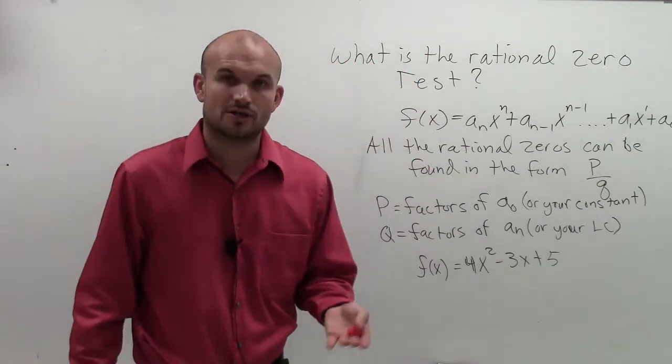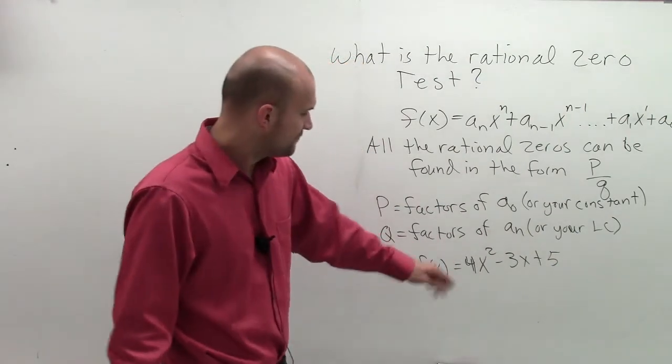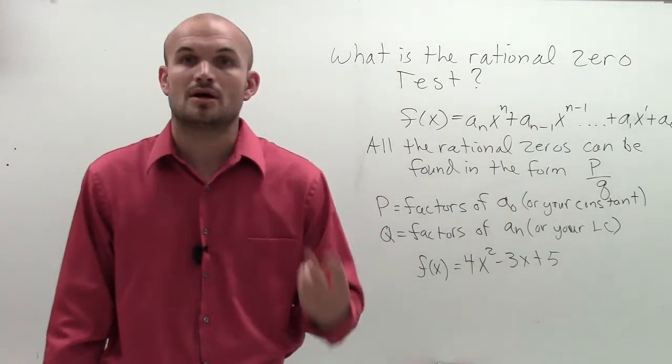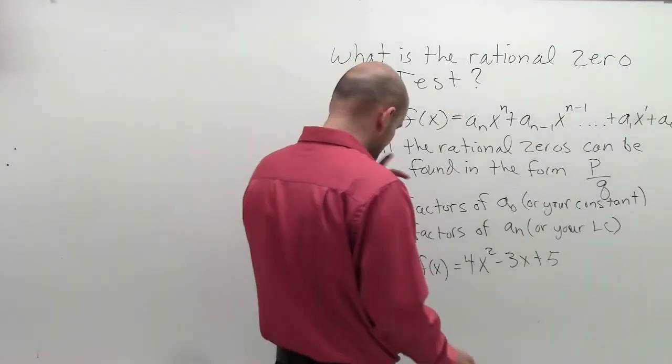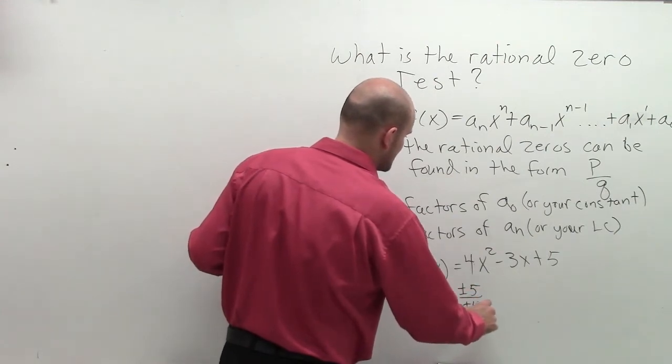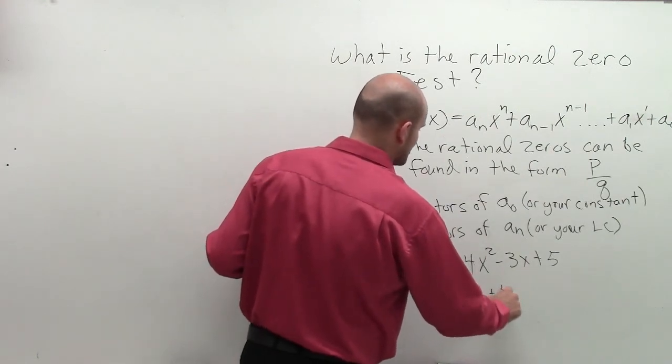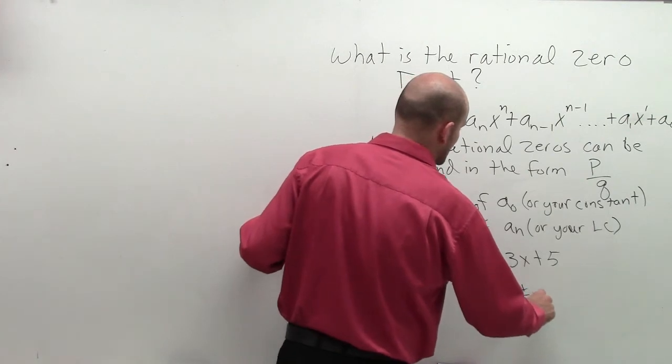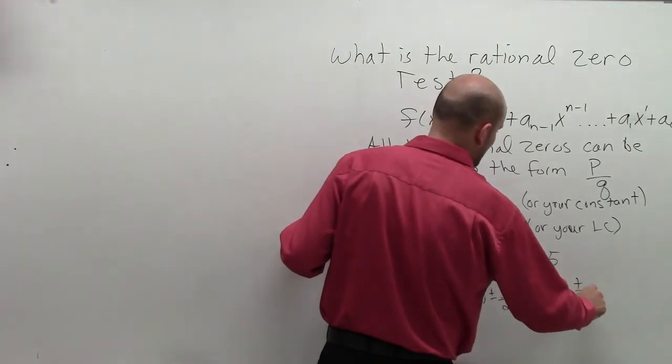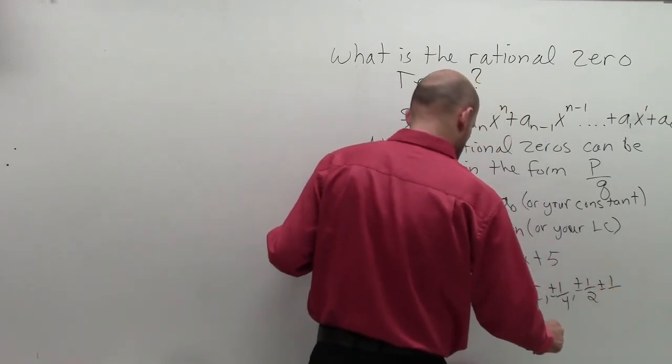So what we're going to do is we're going to take a look at all the factors of p. All the factors of p are going to be plus or minus 5 and plus or minus 1. For 4, all my factors are plus or minus 4, plus or minus 2, plus or minus 1. So we write our p over q. So it's going to be plus or minus 5 over 4, plus or minus 5 over 2, plus or minus 5 over 1, plus or minus 1 over 4, plus or minus 1 over 2, and plus or minus 1 over 1.